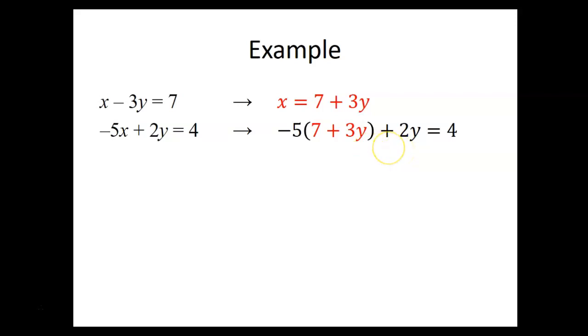That gives us an equation that only involves the variable y. So now we sort of temporarily forget that x was even involved. And we go ahead and solve this for y. So remove the parentheses. Negative 35 minus 15y plus 2y equals 4. Combine like terms that appear on the same side of the equation. So negative 35 minus 13y equals 4. Get it so that the y term is by itself on one side equal to just a constant term on the other side. So here we would do that by adding 34 to both sides. So negative 13y equals 39. Then go from negative 13y to just plain old y by dividing both sides by negative 13. Then we get y equals negative 3.